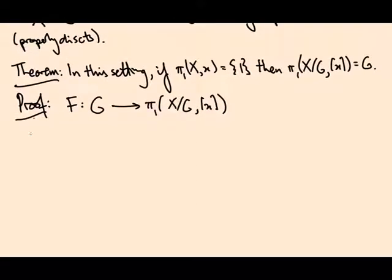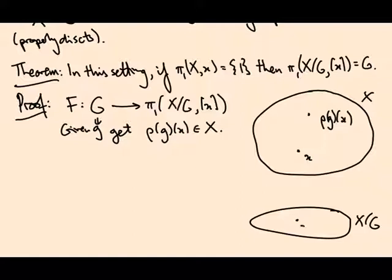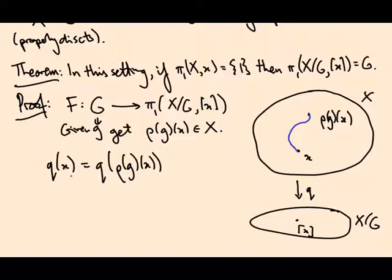So how is this map constructed? For each point g in the group I get a point ρ(g) of x in X. So here's x to start with, here's ρ(g) of x. If I want to construct a loop in the quotient space based on the equivalence class of x, all I need is a path connecting x to ρ(g) of x.